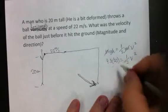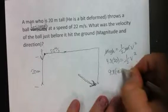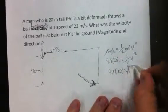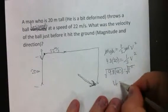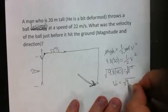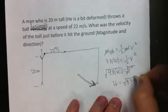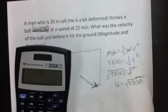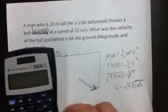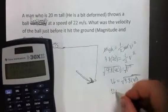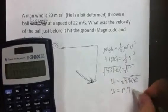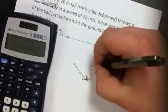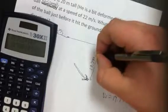Let's solve: 9.8 times 40 equals v squared — I brought the one-half over by multiplying both sides by two. Taking the square root of both sides, the final vertical velocity just before it hits the ground is the square root of 9.8 times 40, which gives us 19.799 meters per second.